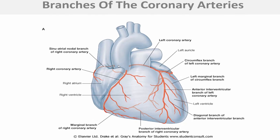This is the right coronary, and this is the marginal or right marginal branch, which then passes directed backward to form the posterior interventricular.